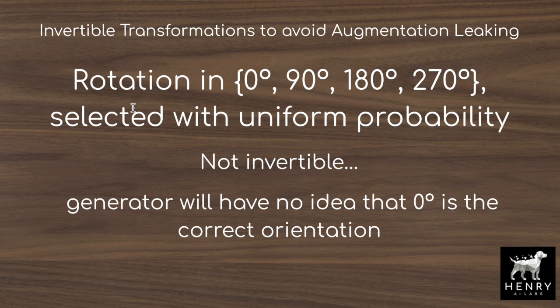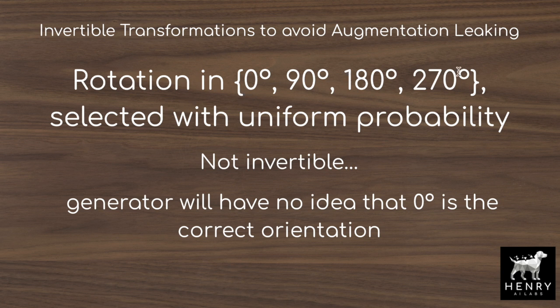Consider applying rotation to an image with uniform probability — meaning 0°, 90°, 180°, and 270° are all selected with the same probability. The generator will have no idea that 0° is the correct orientation and will produce images rotated 90°, 180°, and 270° as well, thinking that's the data distribution. An invertible transformation instead applies more probability mass on 0° compared to 90°, 180°, and 270°. Research shows the GAN framework is good at uncorrupting this kind of perturbation when there's enough signal that it can undo the transformation.